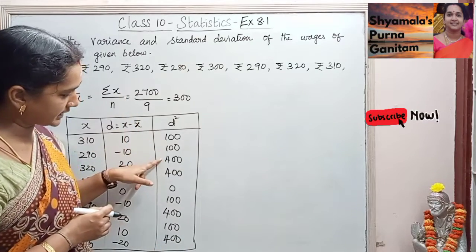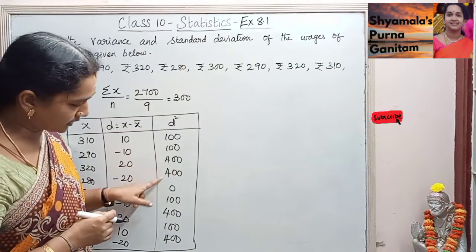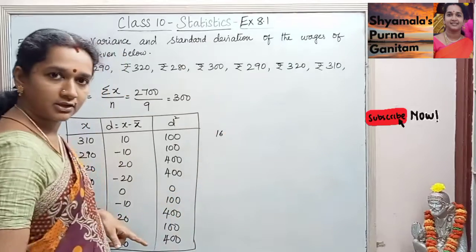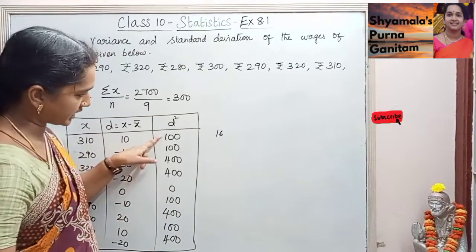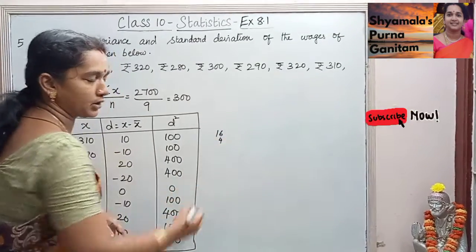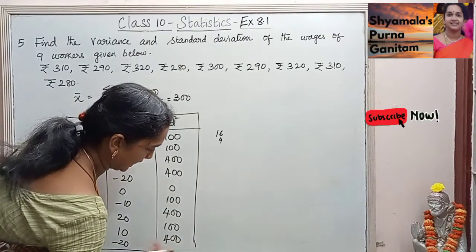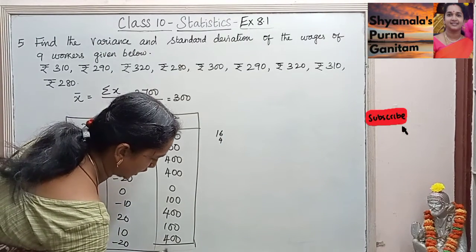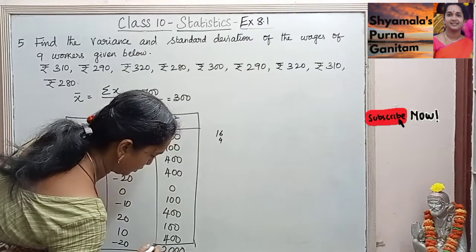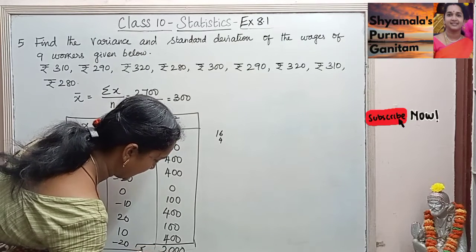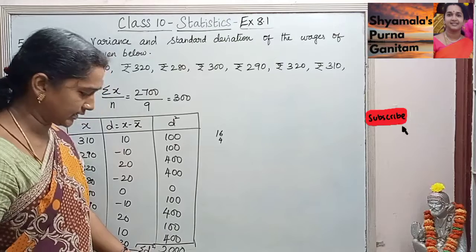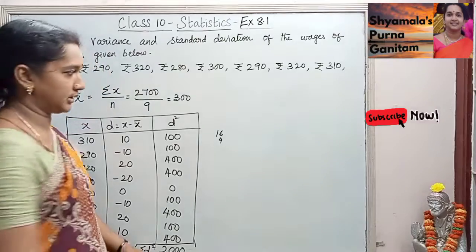When we find the sum of all the d squared values — we have four values of 400 and four values of 100, plus one zero — the total σd² comes out to 2000.